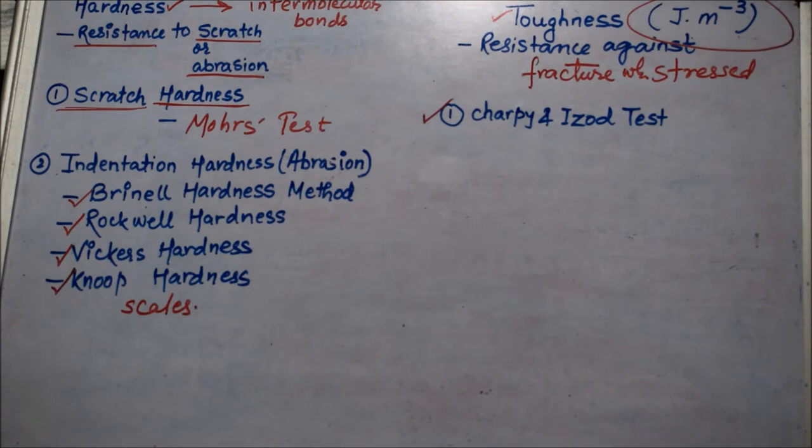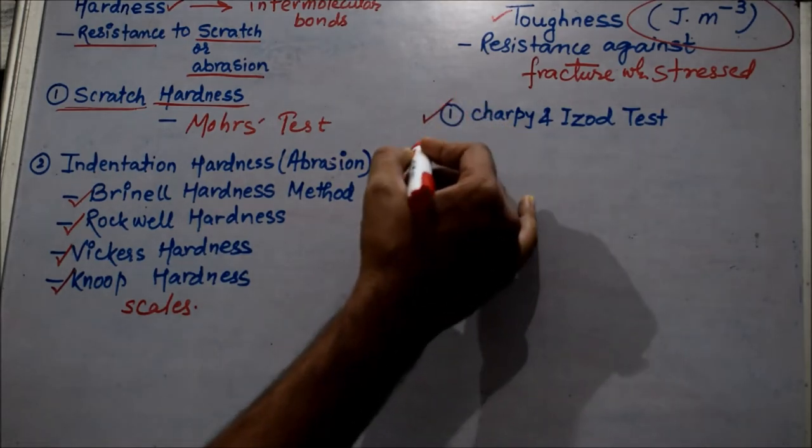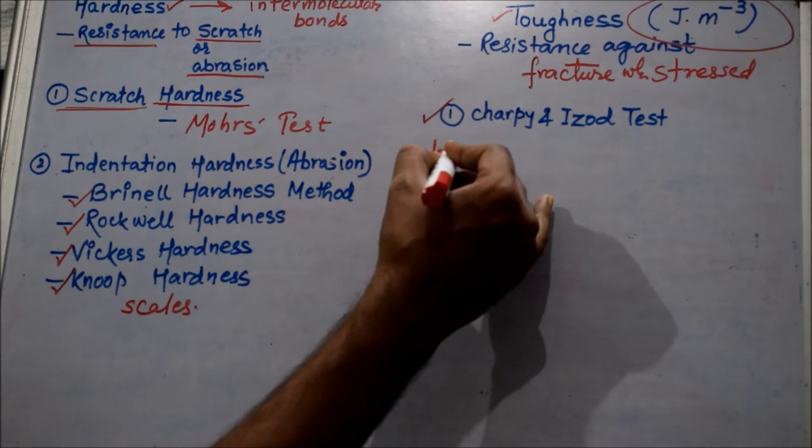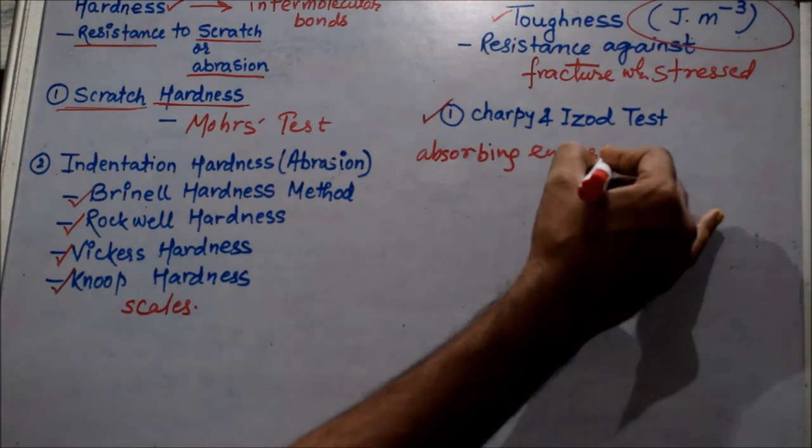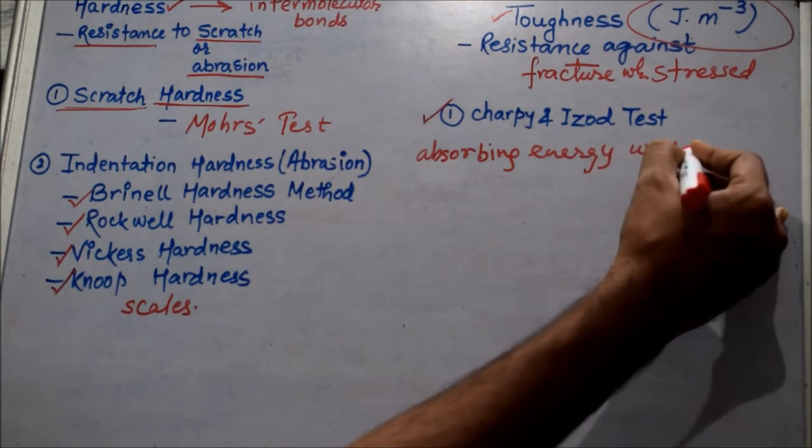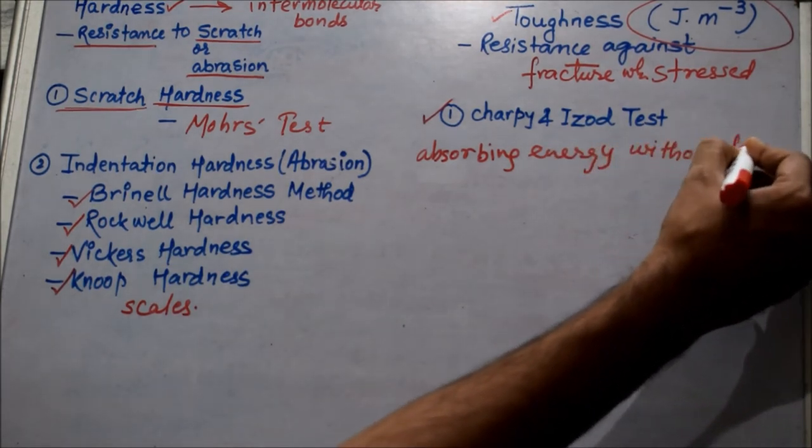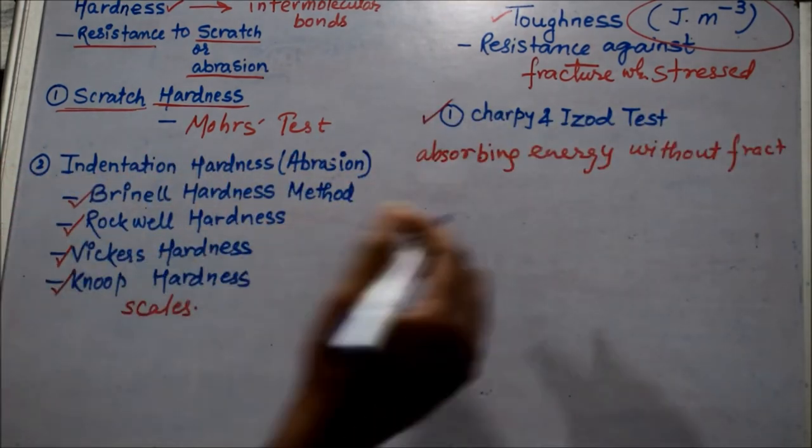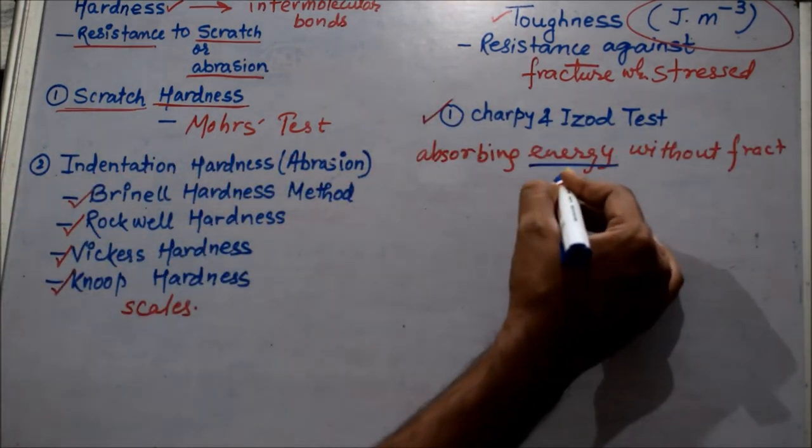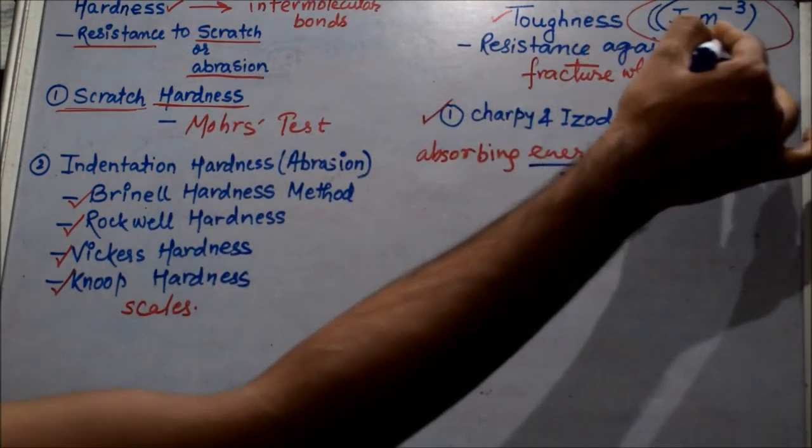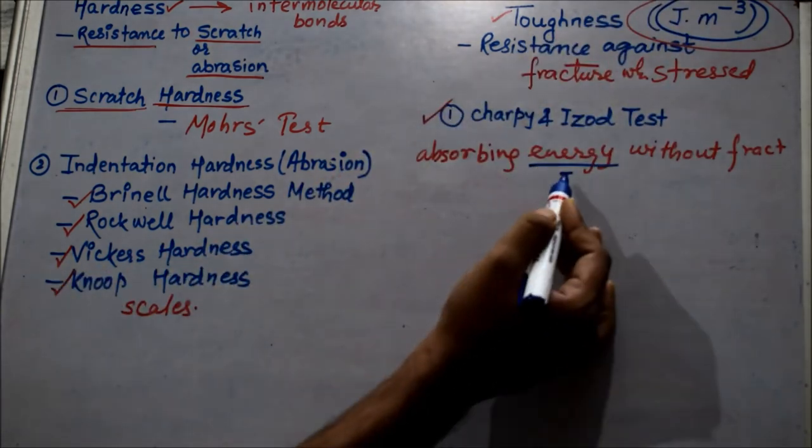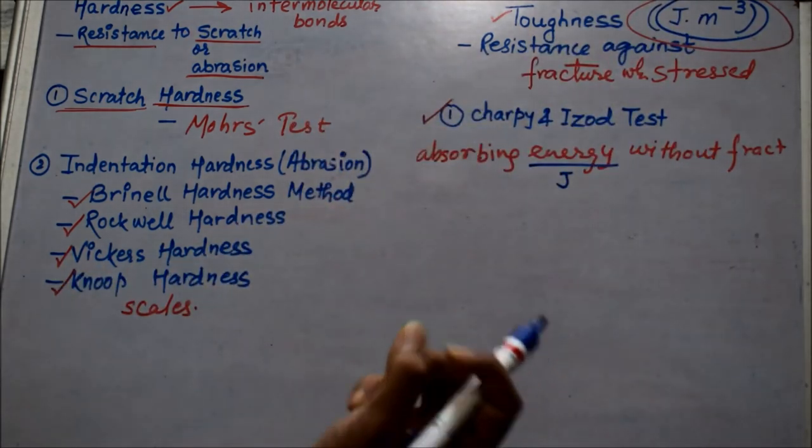Toughness is the property which enables the material to absorb energy without fracture. This is the second definition. So absorbing energy without fracture. Again you see this energy term is used, giving you the SI unit of joule. Whenever you feel what is toughness, you always remember this and then you will get the definition: energy without fracture, absorbing some amount of energy.